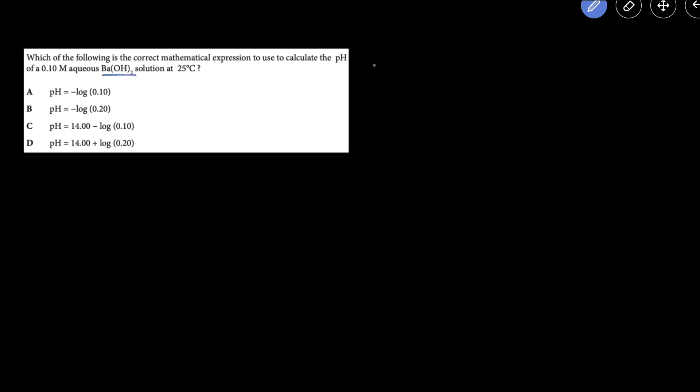So we should recognize that barium hydroxide is a strong base because it has a group 2 metal with hydroxide, and so this strong base is going to completely dissociate. From every one barium hydroxide you're going to get one barium ion and two hydroxides.